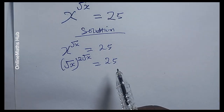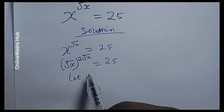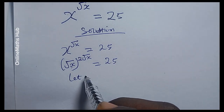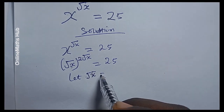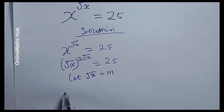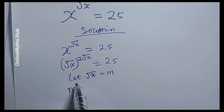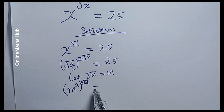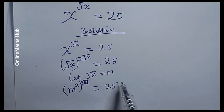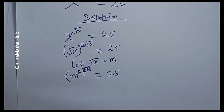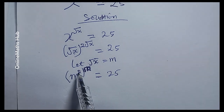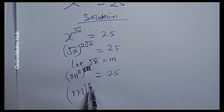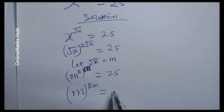To make the solving more convenient, I'm actually going to set this root x to be another variable. So I'm going to set root x equal to m. If I do that, I'm going to have m squared raised to power m, equal to 25. I can bring out the exponents, so I'm going to have m to the power 2m, equal to 25.